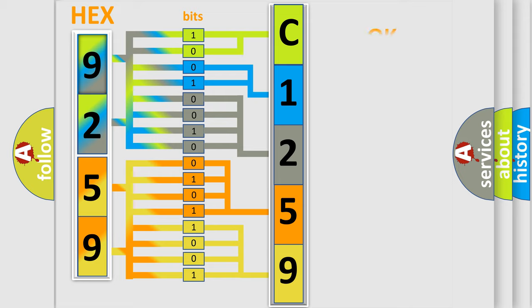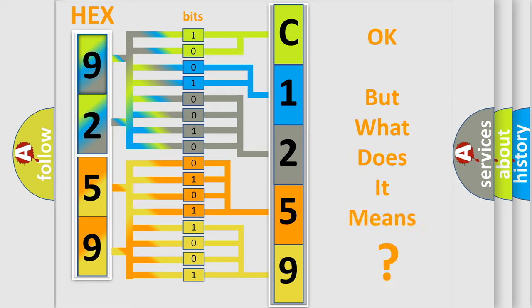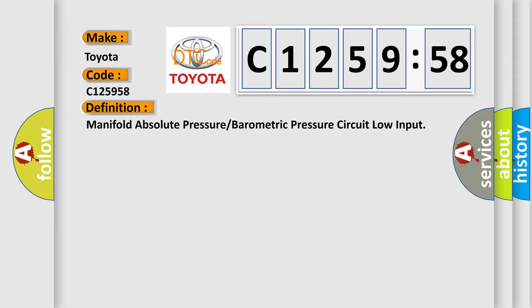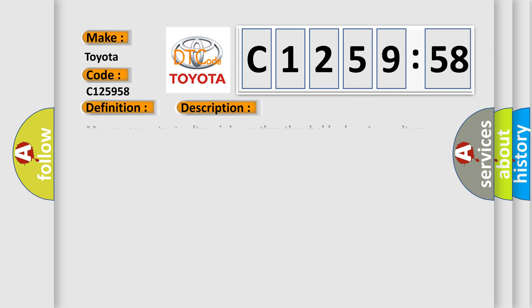We now know in what way the diagnostic tool translates the received information into a more comprehensible format. The number itself does not make sense to us if we cannot assign information about what it actually expresses. So, what does the diagnostic trouble code C-125958 interpret specifically for Toyota car manufacturers?